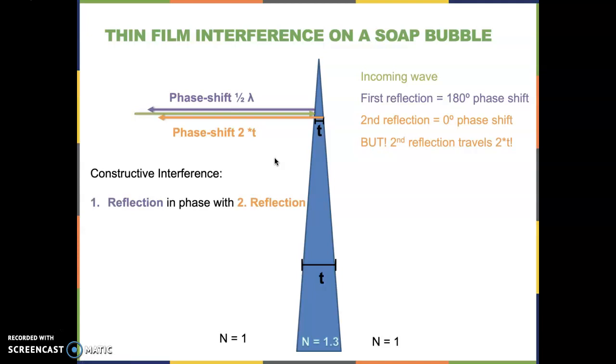Now constructive interference will always occur when my first reflection, the purple one, is in phase with the second reflection, the orange one. For this to be true, I have to have the phase difference to be the same, meaning 1 half lambda has to be equal to 2 times T. An example for this would be light of wavelength of 400 nm that travels through a bubble where it is 100 nm thick. For this case I would get maximum interference.